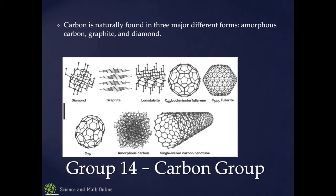This is a good time to talk about allotropes. An allotrope is a different physical form of an element that's still chemically the same thing. For example, diamond, graphite, and amorphous carbon are all forms of carbon, but they're very different. Amorphous carbon is like a chunk of coal — you could probably crush it in your hand. Graphite is really strong in one direction — that's why they use it in tennis rackets and golf clubs. It can flex and move along the plane really well, but you can also shear it because there are no bonds connecting the layers, so it is brittle in that direction. Diamond, on the other hand, has a very strong three-dimensional lattice structure that is incredibly strong.